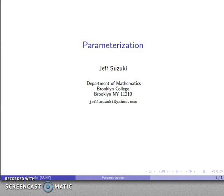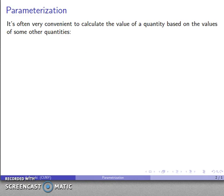As I mentioned earlier, one of the signs that something is extremely important is the number of different ways we have of talking about what is essentially the same topic. And parameterization is another good example of that. So it's often convenient to calculate the value of some quantity based on the values of some other quantities.